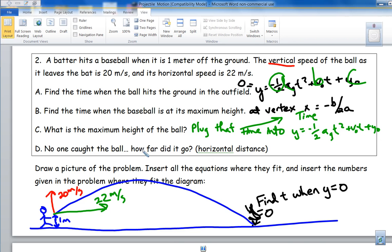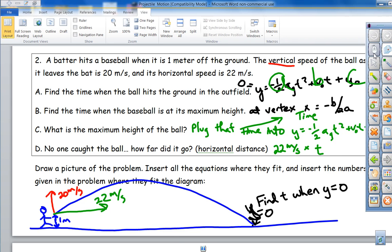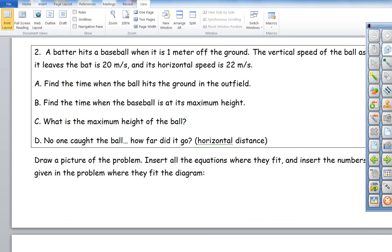And then no one caught the ball, how far did it go? Horizontal distance will be the horizontal speed times the time, so it'll be 22 meters per second times whatever you got for t for how long the ball is in the air.